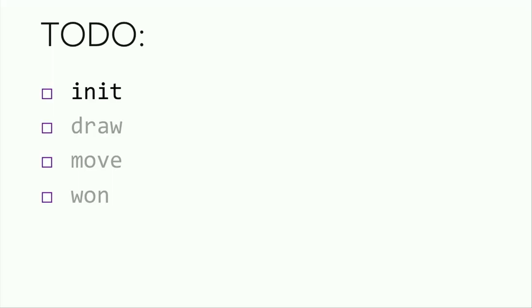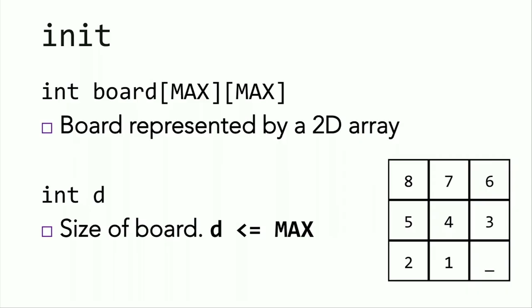First, let's tackle init. In init for initialize, we represent the board in a 2D integer array. And this is a global variable called board with dimensions max and max, the maximum dimensions of the board. Now the actual dimension of the board is given by the user, represented in the integer d, which could be less than max. But in C, you can't resize arrays, so you're stuck with that maximum dimension.